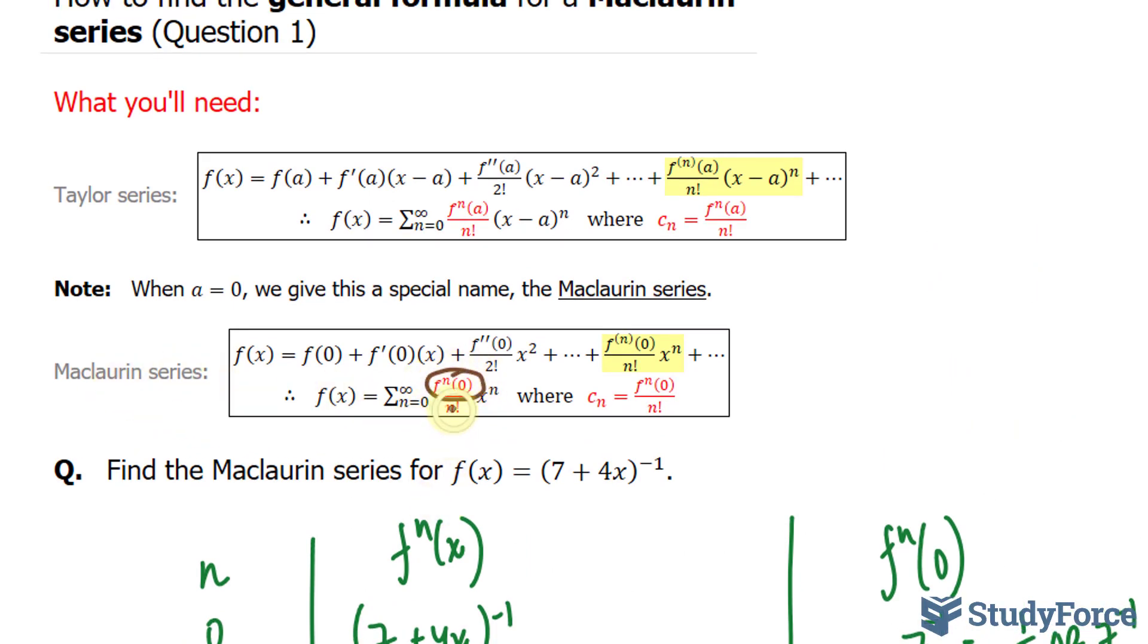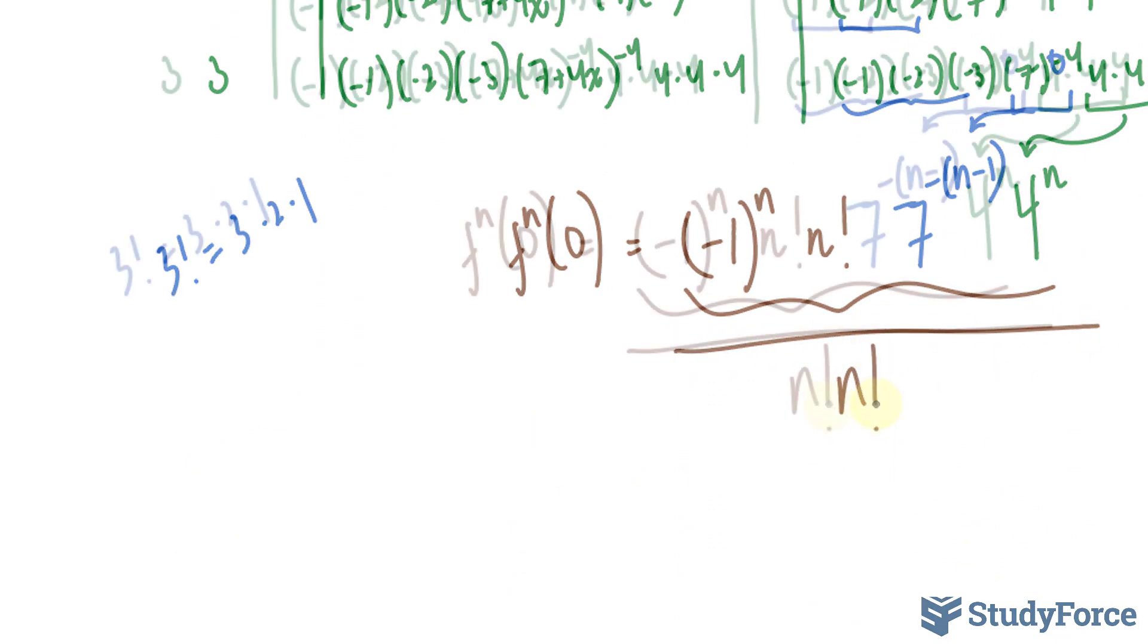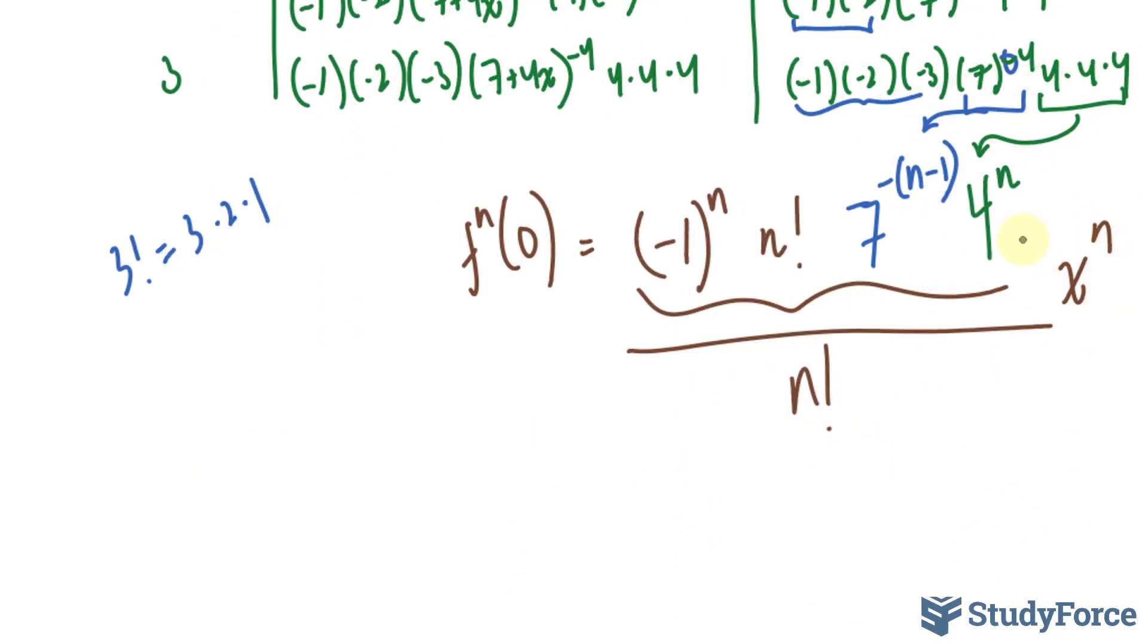This part. It's being divided to n factorial, and it's being multiplied to x to the power of n. So let's incorporate that. We have n factorial times x to the power of n.